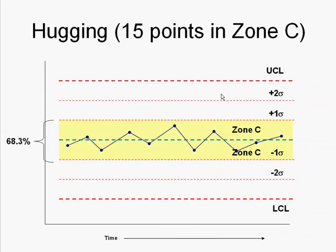Another type of out of control condition is what's called hugging. If you have 15 points in a row right here in zone C, well, guess what? We should have some points outside of here. So that means that for some reason the data is maybe being manipulated and needs to be investigated.